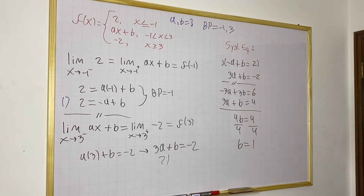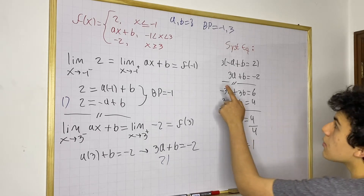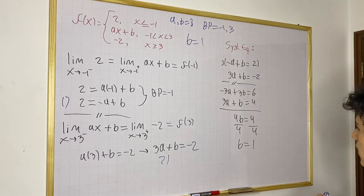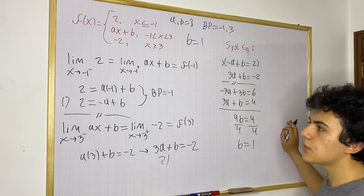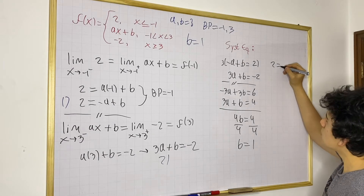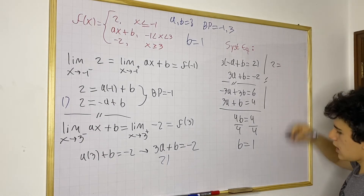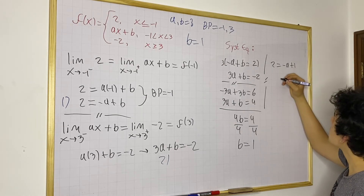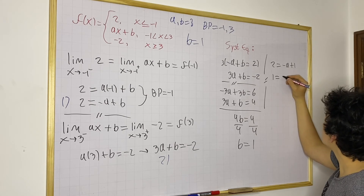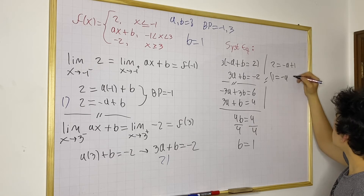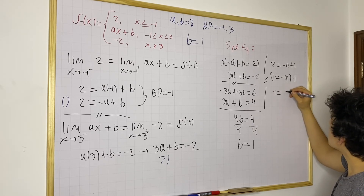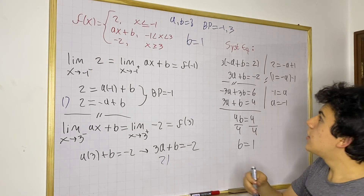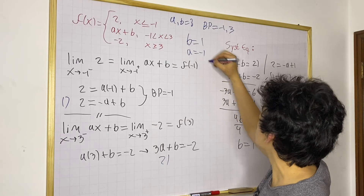Now let's solve for a knowing that b equals 1. Using the first equation: 2 equals minus a plus 1. Subtracting 1 from both sides gives 1 equals minus a, and multiplying both sides by minus 1 gives a equals minus 1. So our two constants are a equals minus 1 and b equals 1.